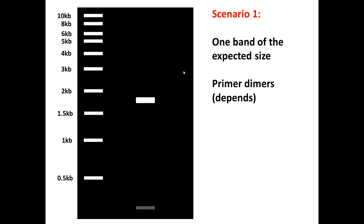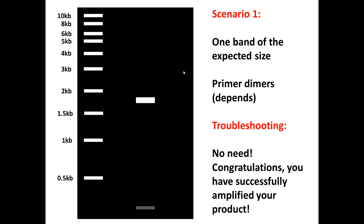Let's say you run your PCR reaction and then you run 5 microliters of that on a DNA gel and you want to see what it looks like. So this is scenario one: you get one band of the expected size and you get some primer dimers which is very common. What's the troubleshooting step? Well, actually you don't need to troubleshoot if this is what you're seeing. You successfully amplified your fragment of interest and congratulations. You can now turn off this video and go ahead and do your next part of the experiment. This is obviously the ideal situation.